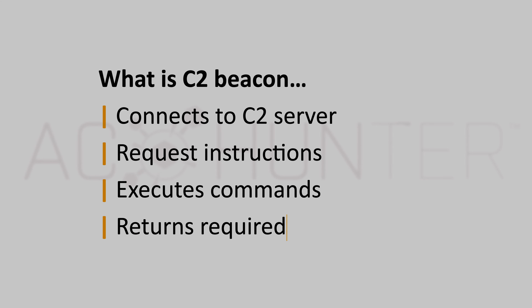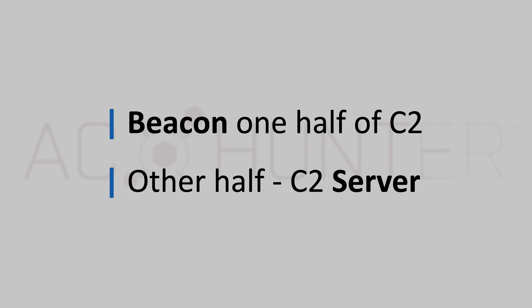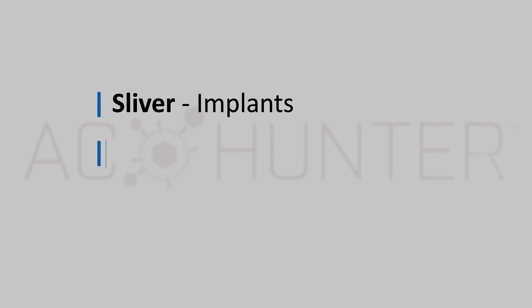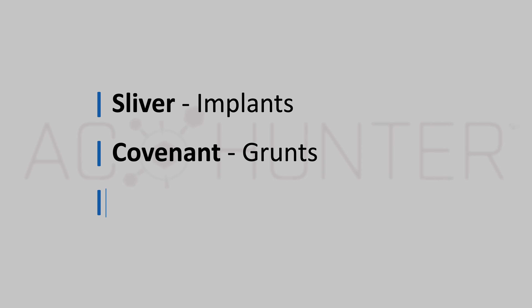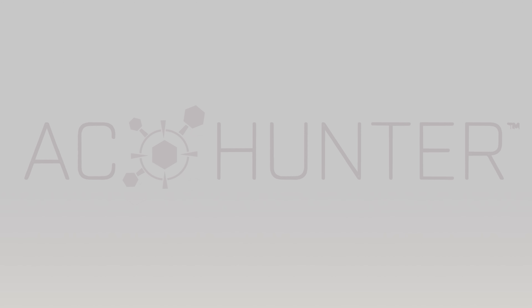A C2 beacon is essentially the malware that transforms an unsuspecting host into an unwitting client — the software running on a victim system that connects back to a C2 server to request instructions, execute commands, and return required output. It forms one half of the C2 system; the other half is called the C2 server or, in Cobalt Strike terminology, the team server. Various frameworks use different terminology: Sliver calls them implants, Covenant refers to them as grunts, and remote access trojans typically call them stubs — but they all refer to the same concept.